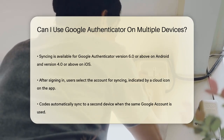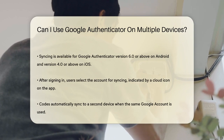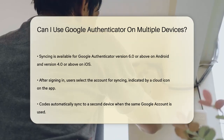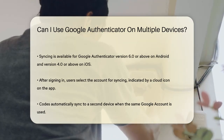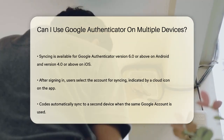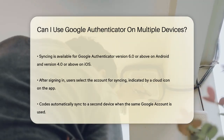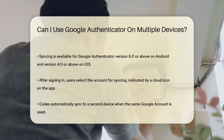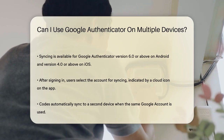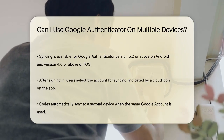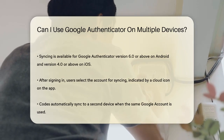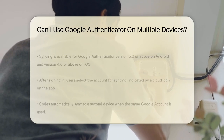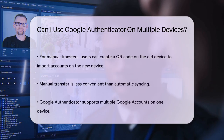If you have a second device, you can open the Google Authenticator app on it, sign in to the correct Google account, and your codes will automatically sync to this new device. This ensures that you have access to your verification codes no matter which device you're using.